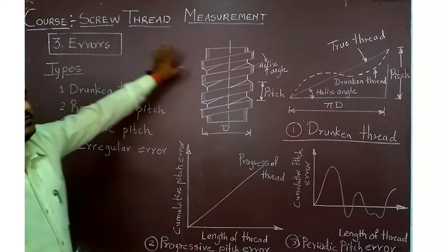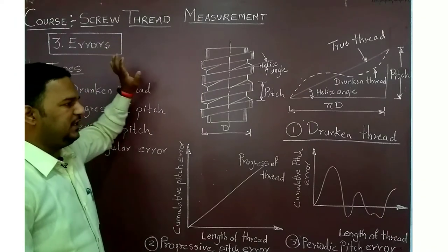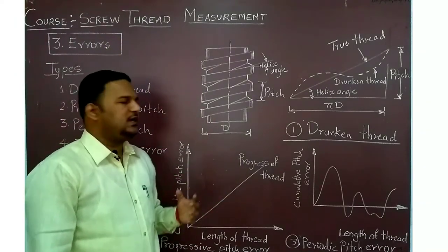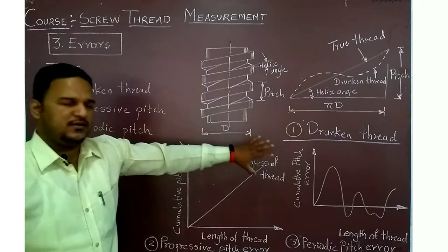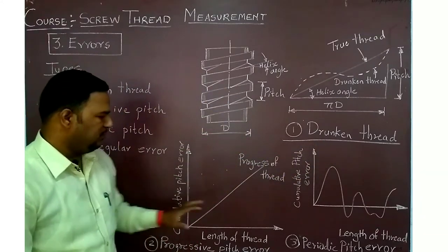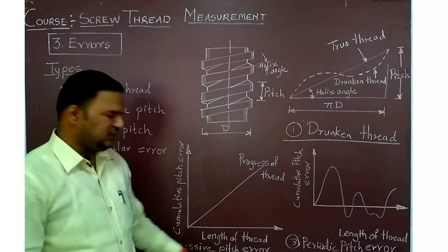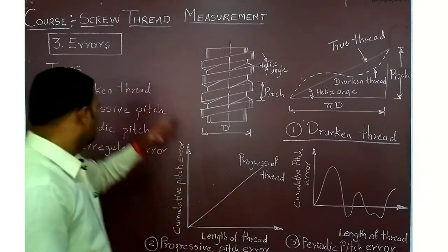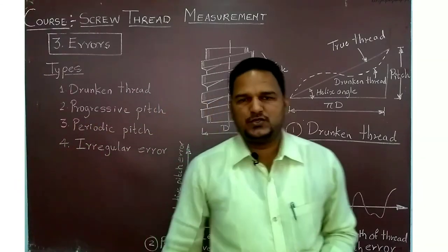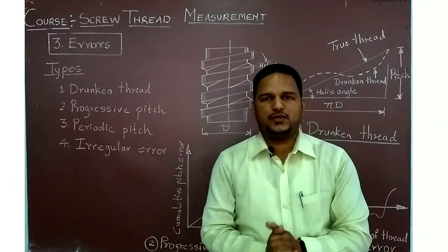In screw thread measurement, understanding errors is very important. The types are: drunken thread error, progressive pitch error, periodic pitch error, and irregular error. That is it for today's lecture — hope you enjoyed the topic of errors in the screw thread. Thank you.